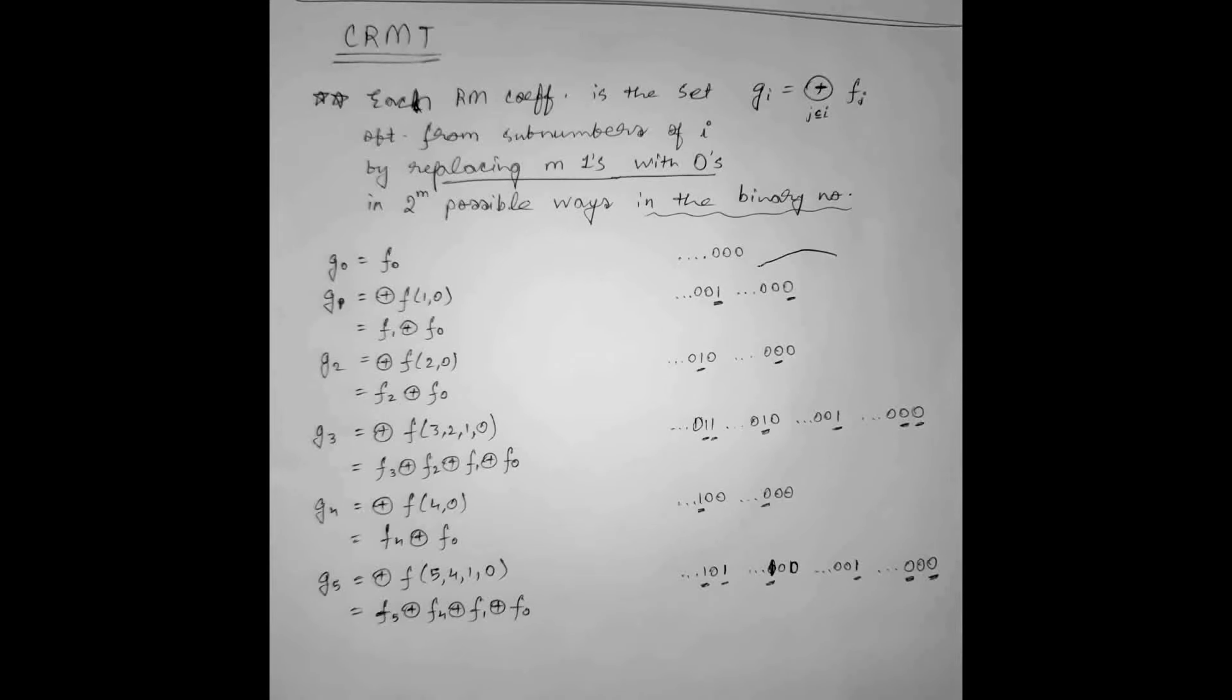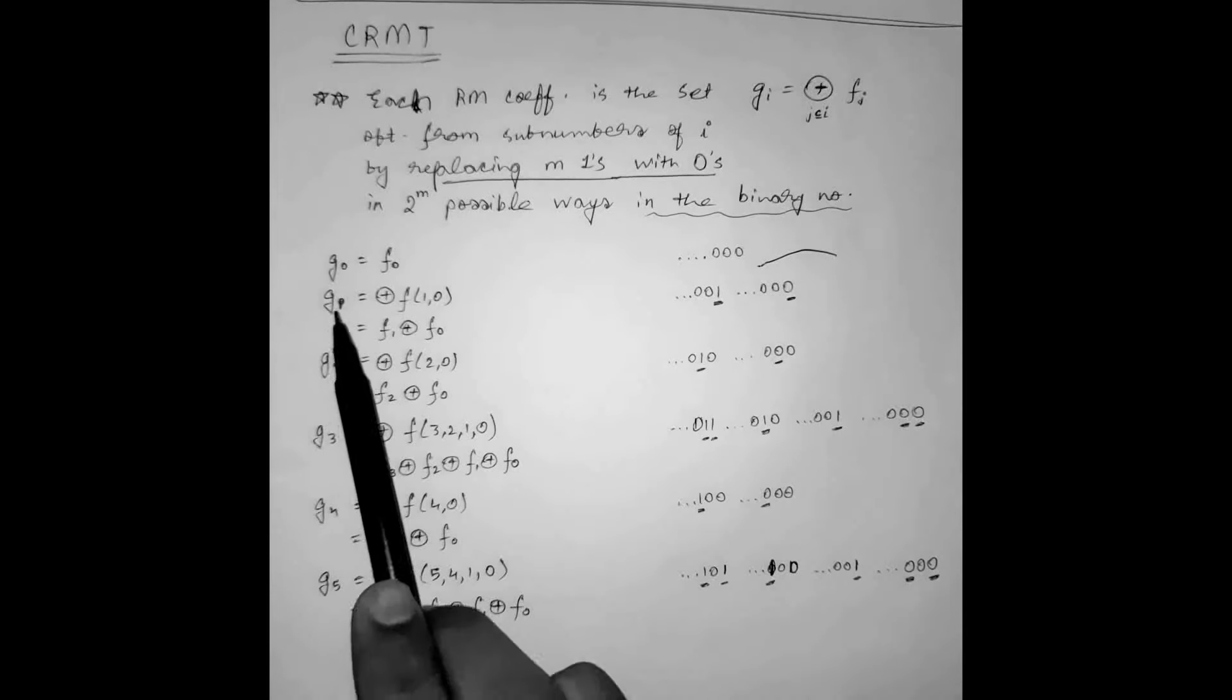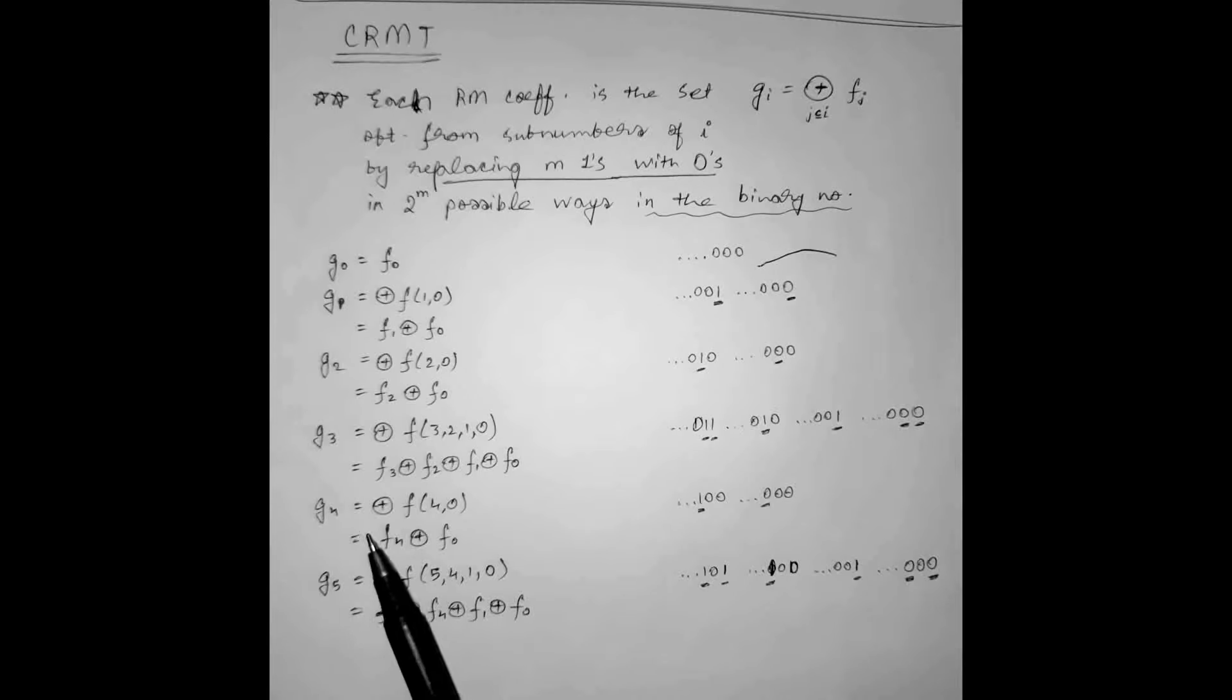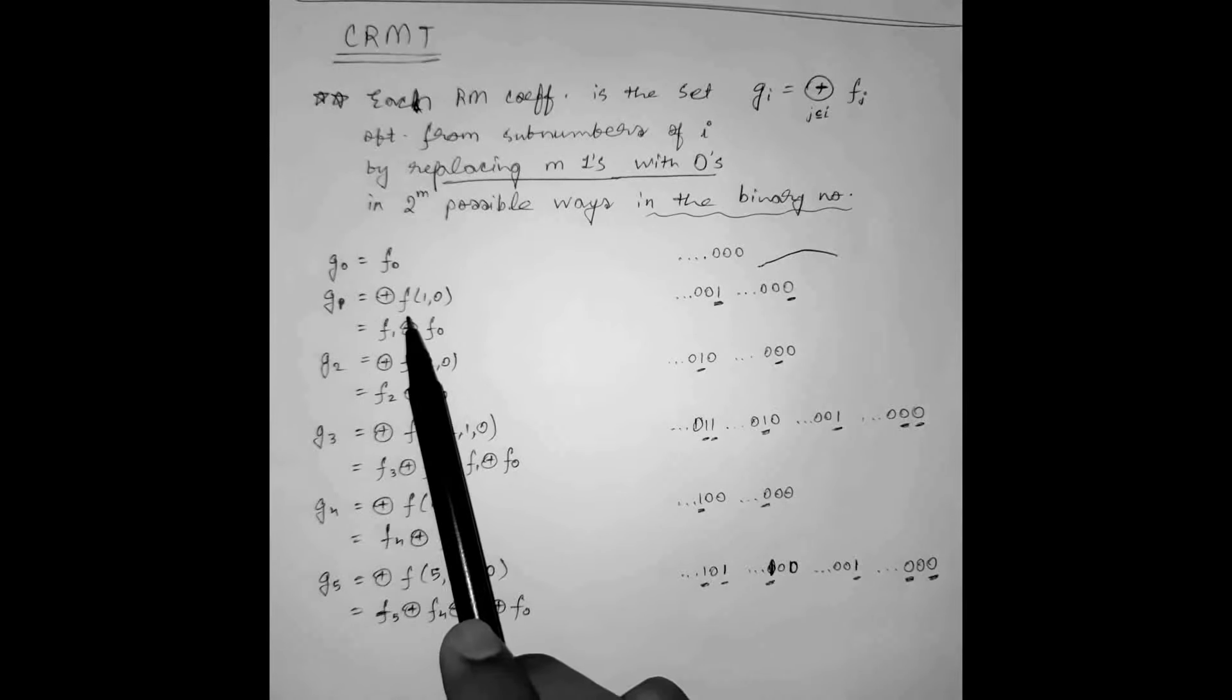Now these G terms are Reed Muller coefficients as you can see: G0, G1, G2, G3, G4 and so on. So G0 is the first term F0.